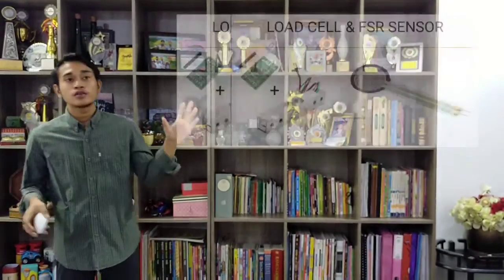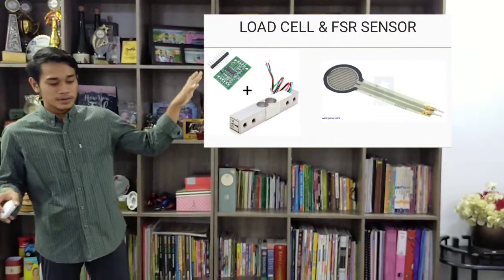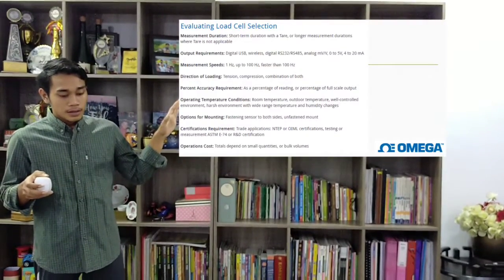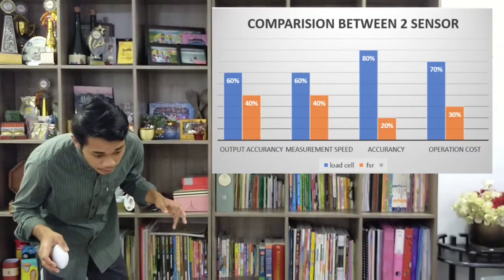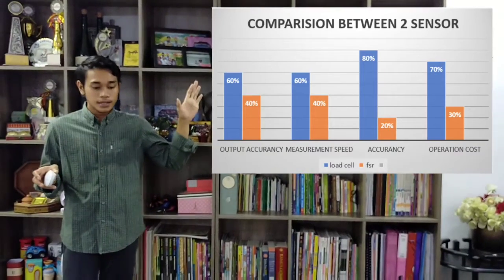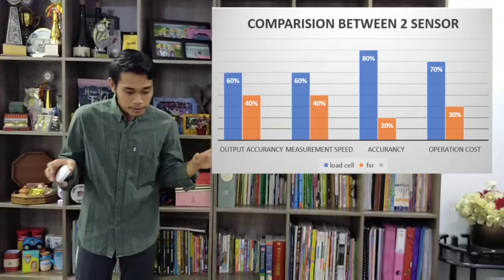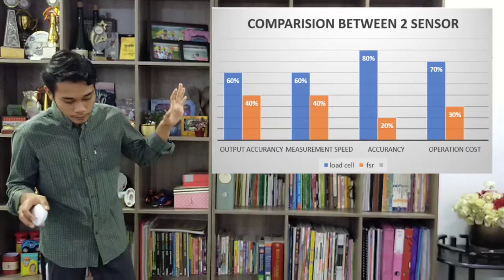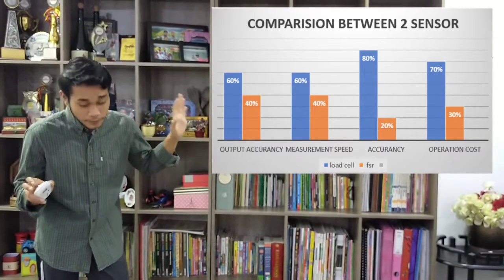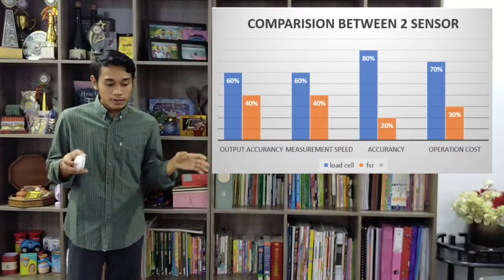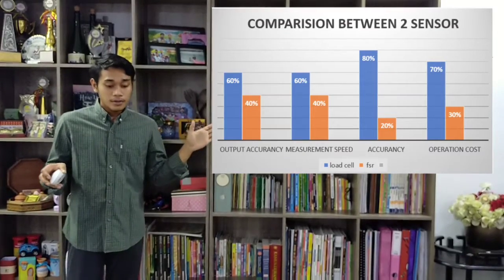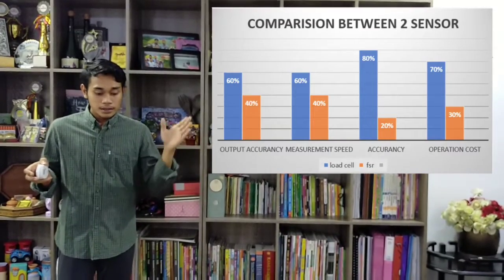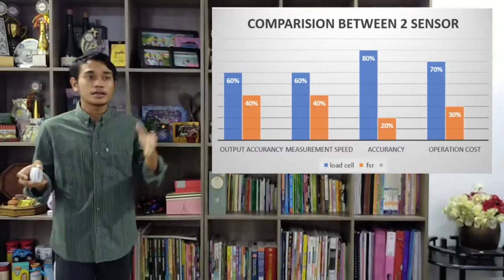Why did I choose a load cell over another sensor such as FSR? I reviewed the datasheet and found that the output accuracy of the load cell is 350% higher than FSR. The measurement speed of the load cell is also 350% higher than FSR, and the operation cost of the load cell is 450% better than FSR.